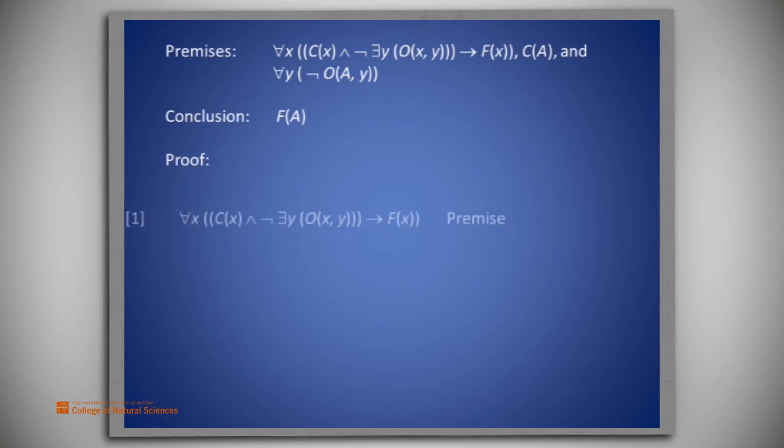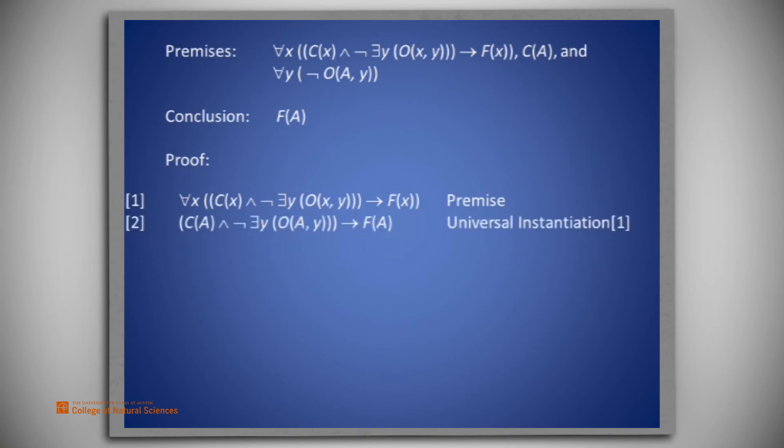Now, we begin the proof by listing on line one, the first premise, for all x, C(x) and not there exists y, such that O(x, y), imply F(x). We want to instantiate the x to A, so on line two, we have C(A) and not there exists a y, such that O(A, y), imply F(A).